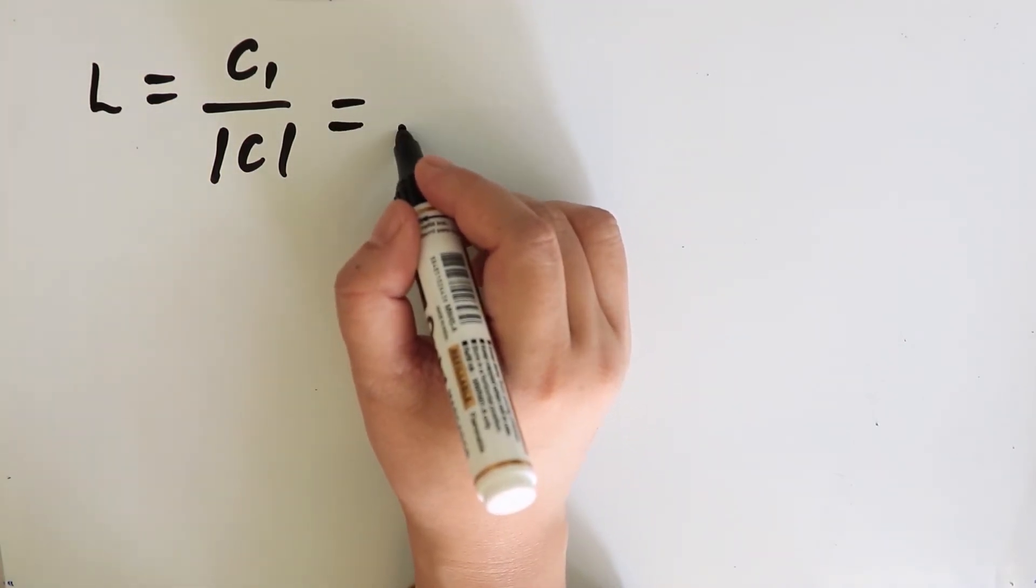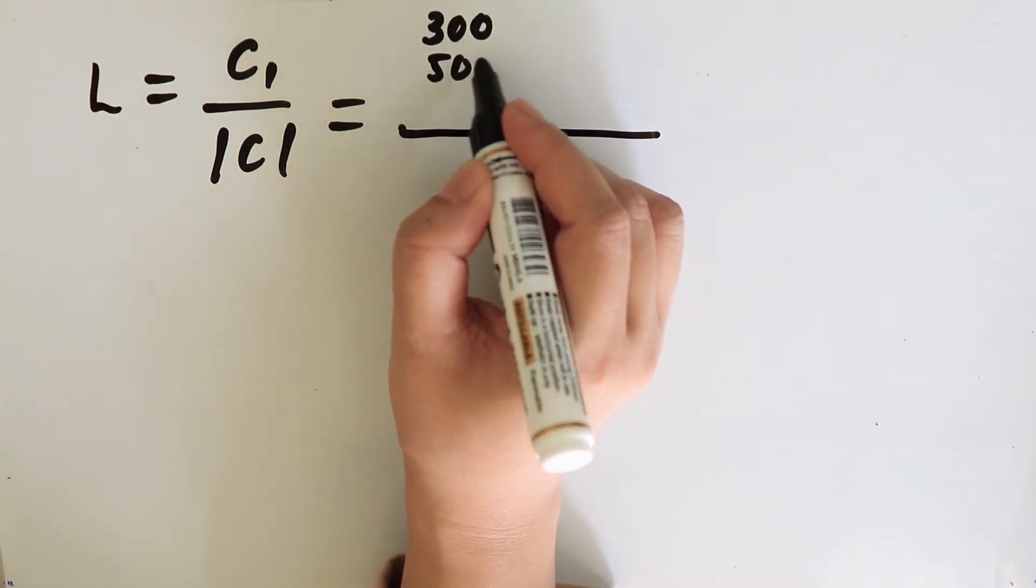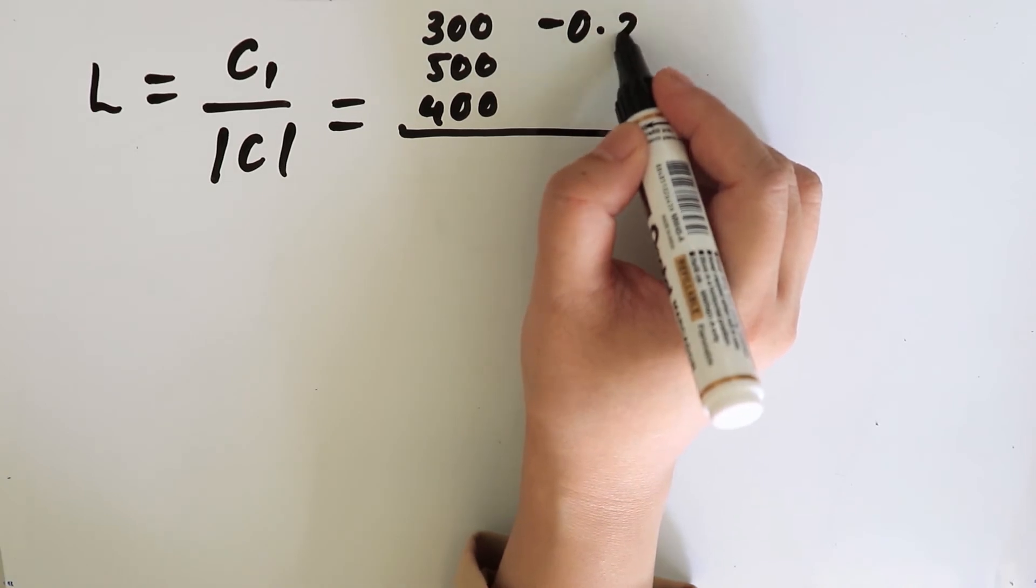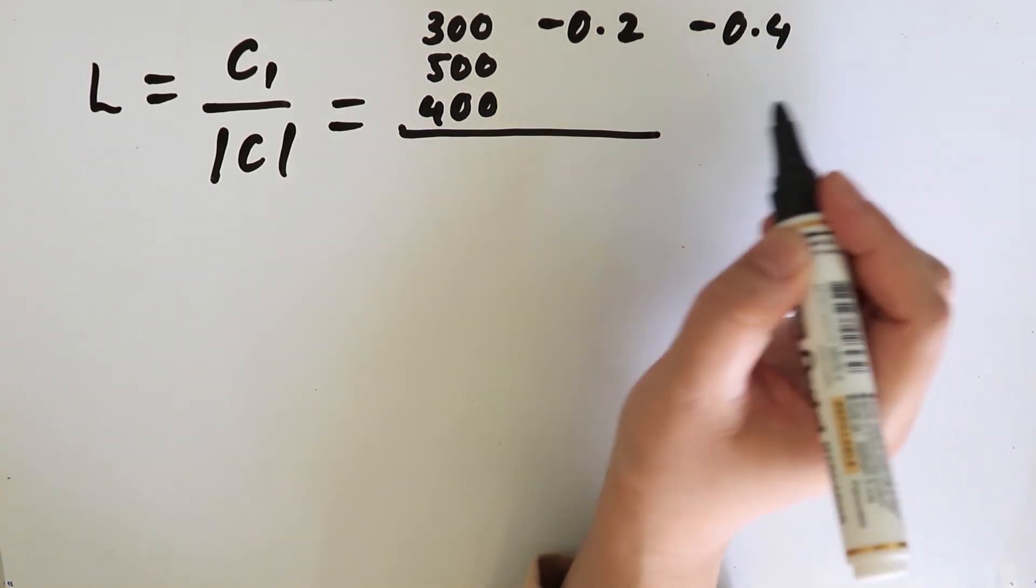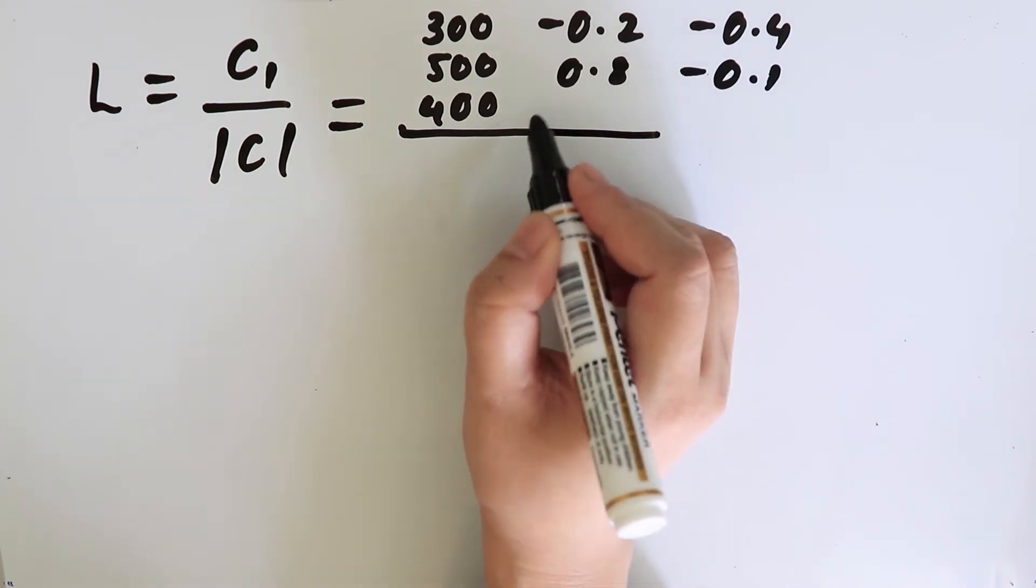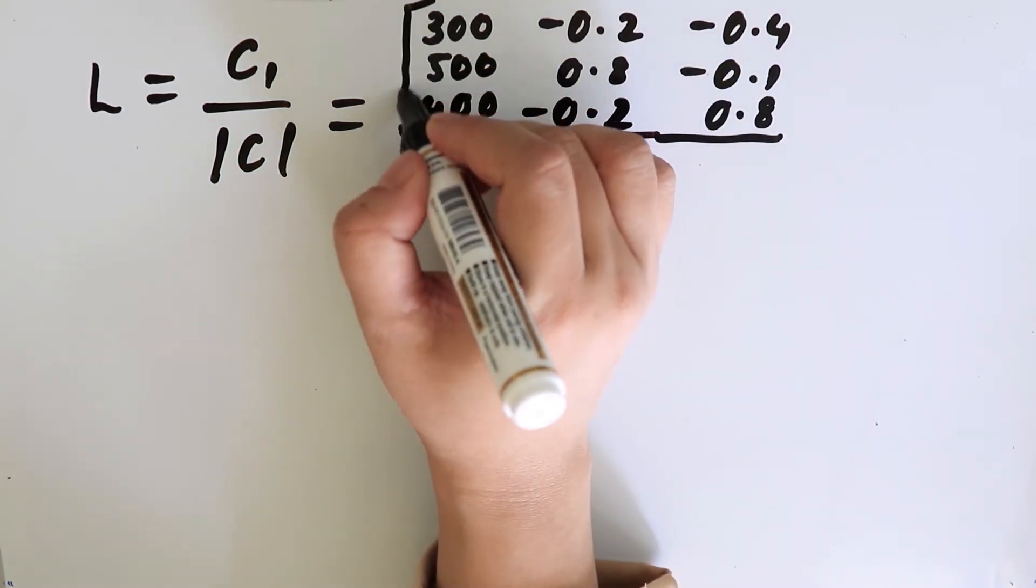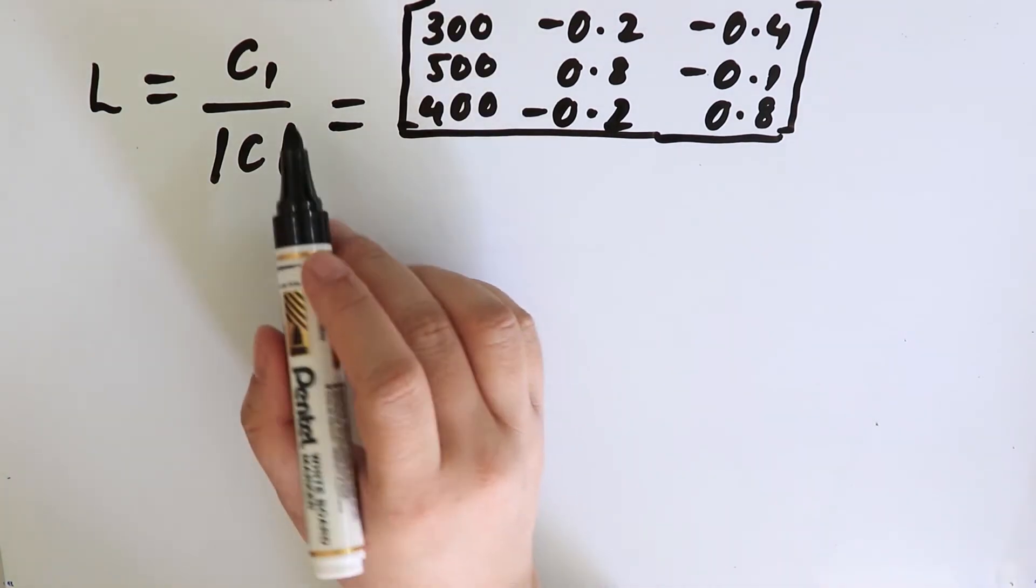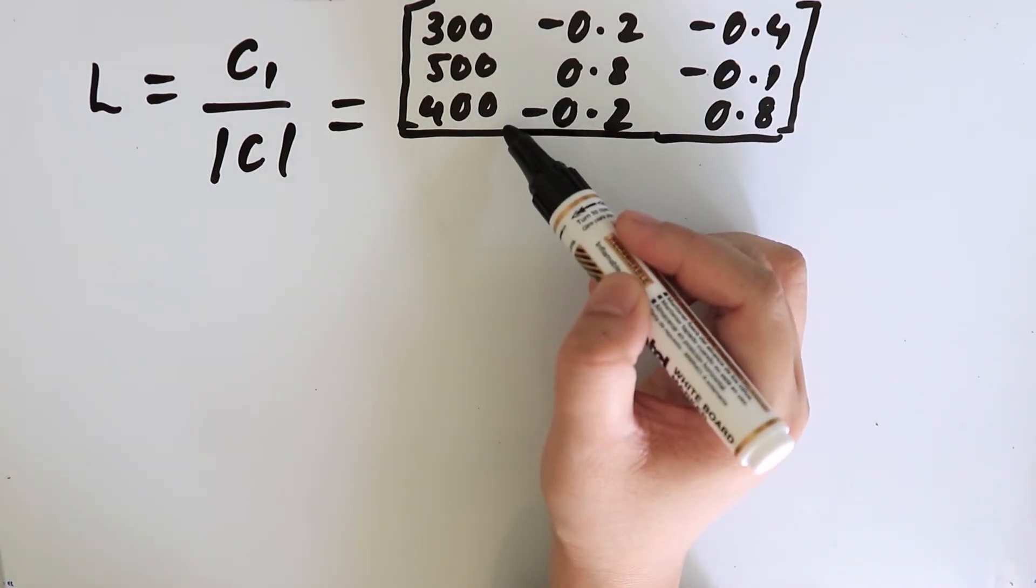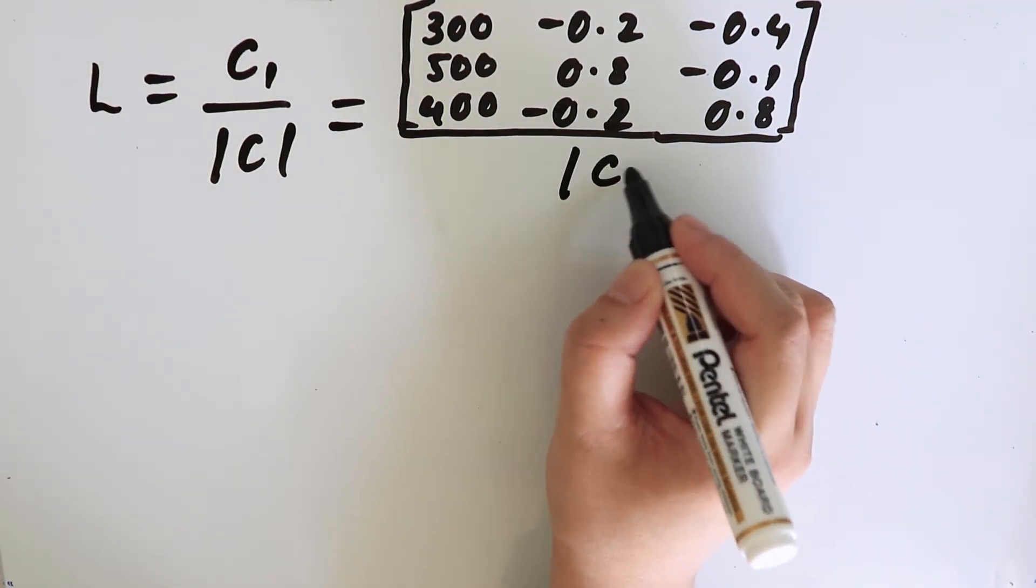Let us now write C1. C1 will be replaced by 300, 500, and 400, and the rest will remain the same: minus 0.2, minus 0.4, 0.8 and minus 0.1, minus 0.2 and 0.8. This will be C1. This C1 is the matrix of the coefficient in which the first column of the coefficient has been replaced with the values of the final demand vector, and that is divided by the determinant of C.